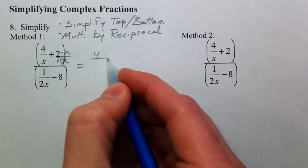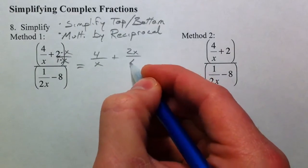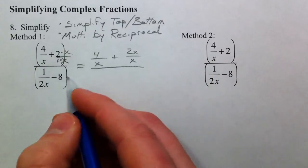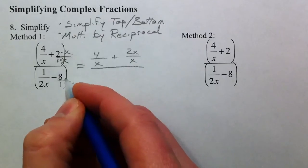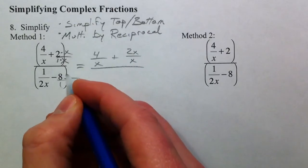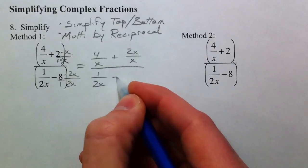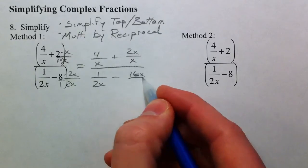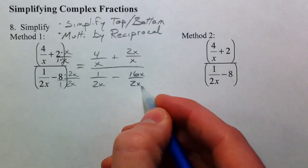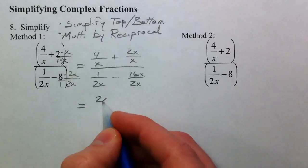So we get 4 over x plus 2 times x is 2x over x. On the bottom is 8 over 1. I want it to be 2x to have the common denominator with that one, so I'm going to multiply by 2x. So 1 over 2x minus 8 times 2 is 16x over 2x.